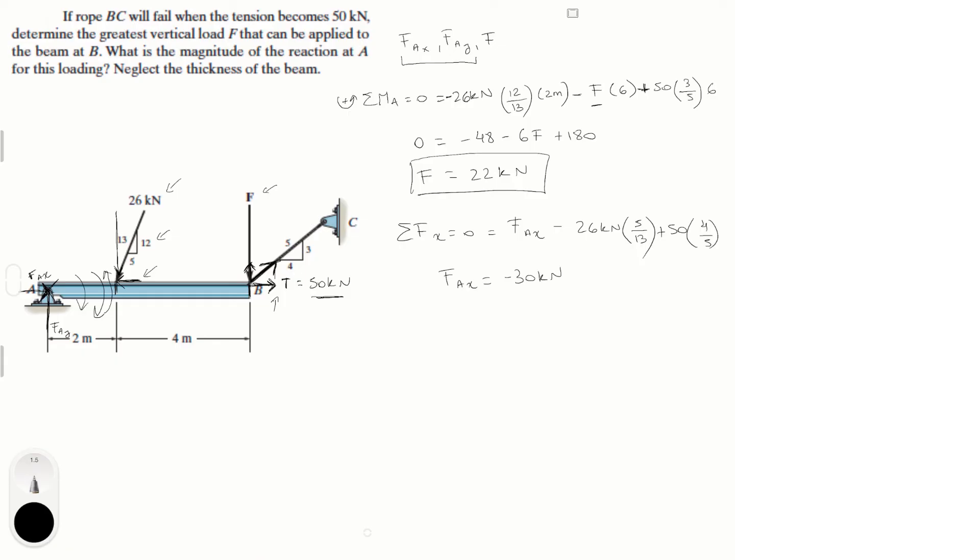The fact that it's negative, it means that I didn't guess right when I drew the free body diagram. So it means that instead of going to the right, I drew it going to the right. So F_A of X is equal to 30 kN, but it is going to the left. Okay, so I'm just going to, I'm not going to draw it on the diagram, but it's going to the left. It's not going to the right. That's basically what it means for it to be negative.